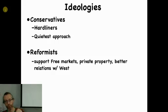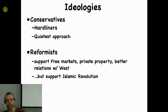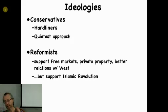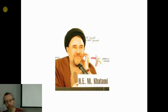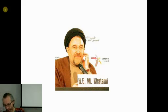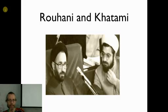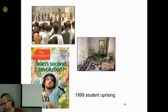That brings us to the reformists. Fundamentally, reformists are about economics: they support free markets, private property, better relations with the West, and they would like to stop the nuclear program because that's what led to the sanctions against Iran. Very importantly, the reformists tend to support the Islamic revolution - we're not talking about the constitutional reformists from the Mosaddegh era or the 1905 constitution era. These modern Iranian reformists really got their beginning and highlight from 1997 to 2005 under President Khatami.